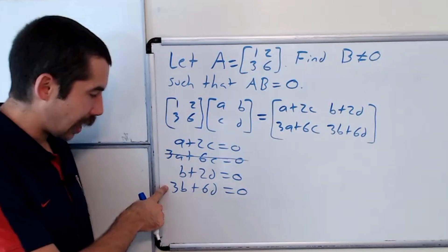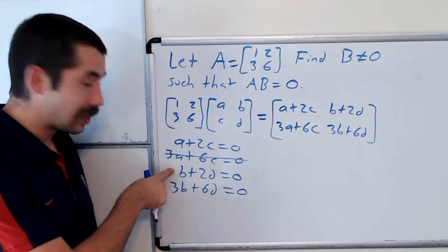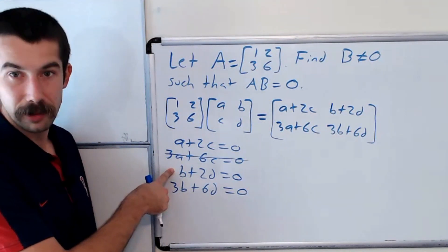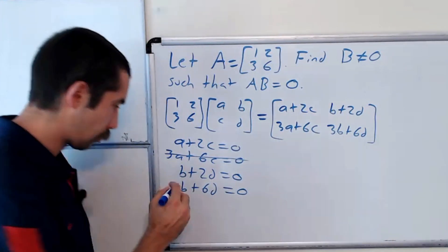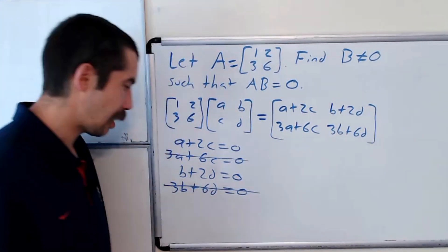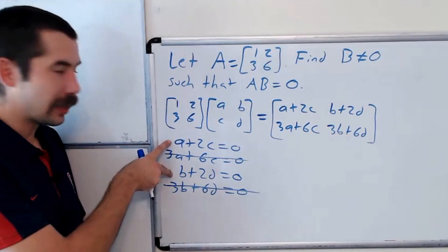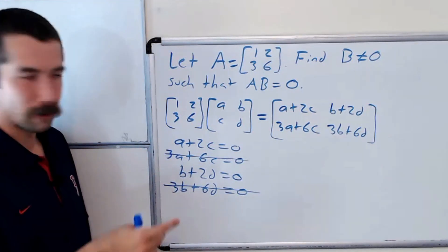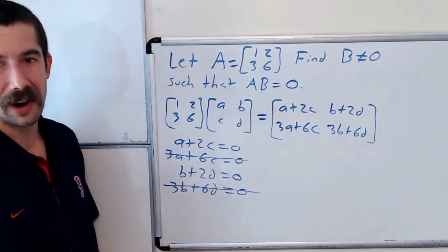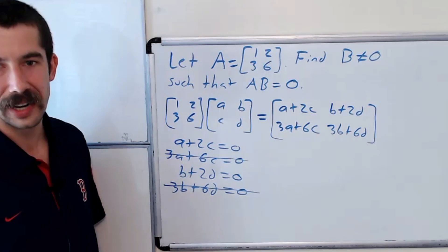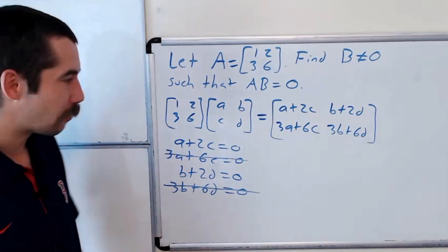And similarly, this last equation is the same thing as this one. It's just times 3. So it gives us no new information. So we can cross that one out. So we have these two equations and four unknowns. And these two equations don't share any variables. So we're not going to be able to find a unique solution. There's going to be infinitely many solutions.